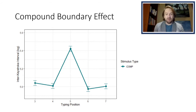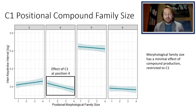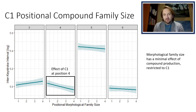The first result for inter-keystroke intervals shows that we did recreate the compound boundary effect — we observed a significant elevation in inter-keystroke intervals at position 5. Keep in mind that all of our stimuli were 8 letters in length, so the boundary position will always be at position 5. The first variable of interest was C1 positional compound family size, or the family size of the modifier. The only position affected by this variable was position 4, where we see a facilitation effect of family size — the larger the family size, the faster the inter-keystroke interval. This was a very surprising result, as we expected the opposite: that modifiers with larger family sizes would exhibit competition with other co-activated family members during production. However, this seems not to be the case.